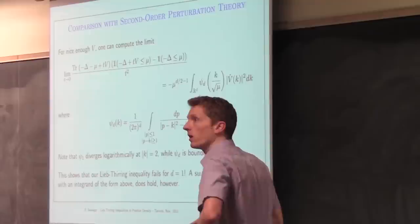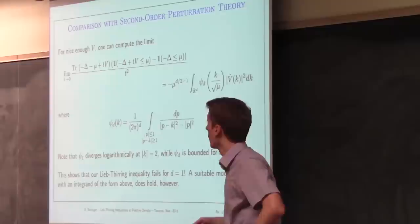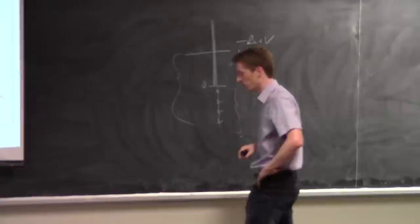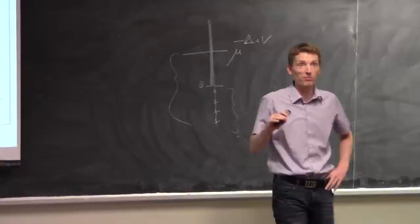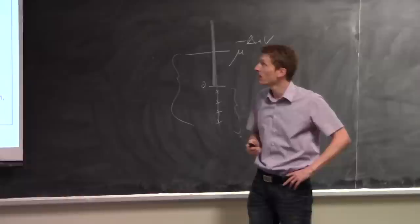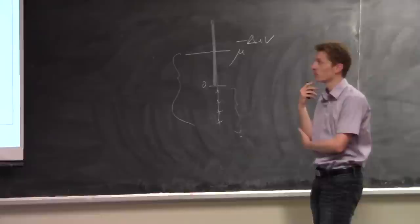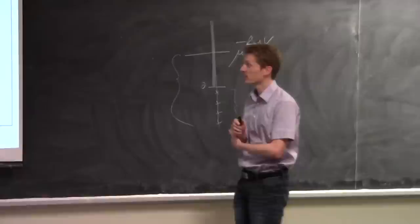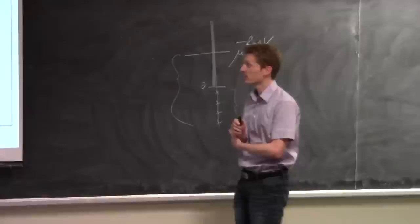The proof is surprisingly simple — simpler than the original Lieb-Thirring proof, even though the result is more general. The key idea is a method recently invented by Rumin which gives the Lieb-Thirring inequalities using basically nothing but a triangle inequality. The right side of the inequality — the semi-classical approximation — is convex in the density, which allows splitting the problem into pieces.